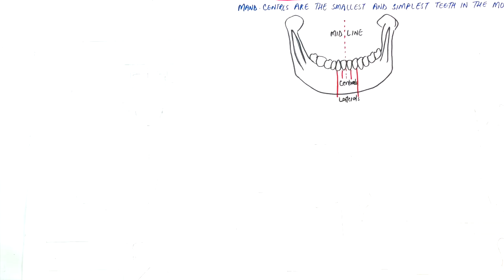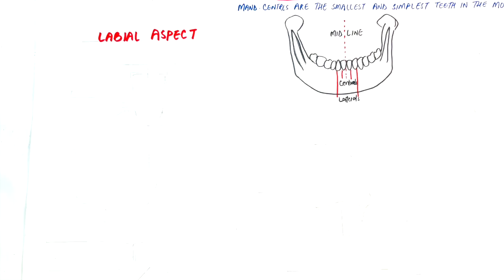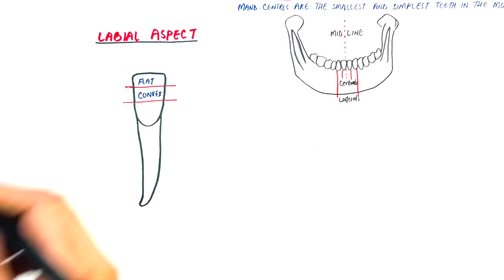Starting from the labial aspect, the labial surface of the crown is smooth. It's flat at the incisal third, convex at the middle third, and then tapers down to the cervical margin or cervical outline.